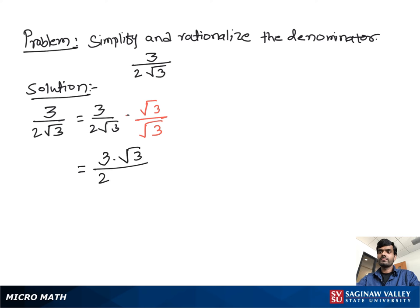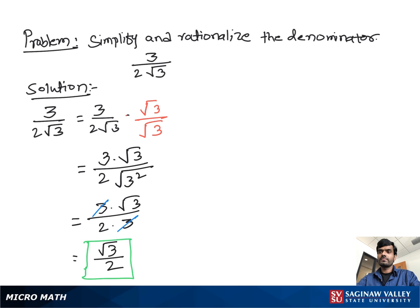We get 3 times square root 3 over 2 times 3, because square root of 3 squared removes the square root sign and gives us 3. As you can see, the 3 in the numerator and the 3 in the denominator cancel, and we get our final answer: square root of 3 over 2.